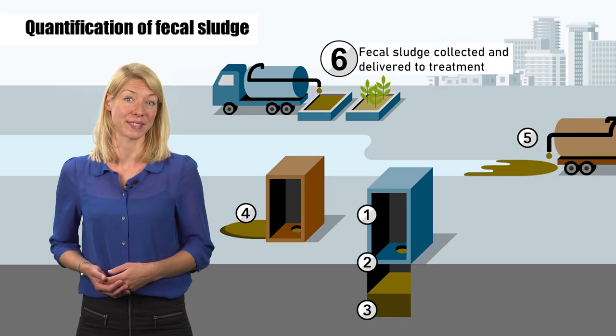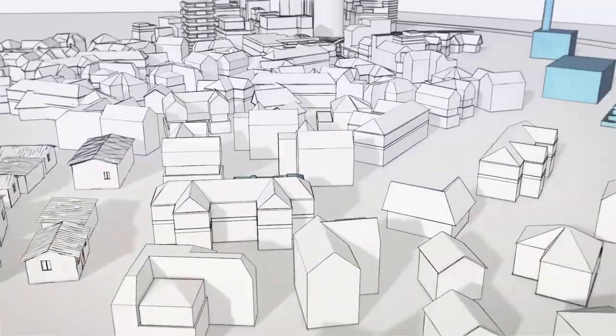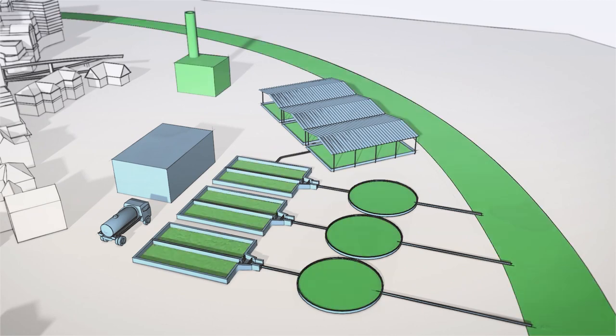Number six is what we want to see. Fecal sludge that is collected and delivered to a treatment plant or legal discharge location.